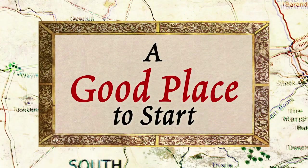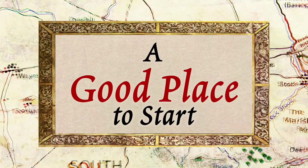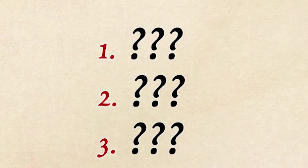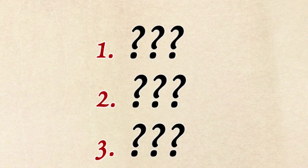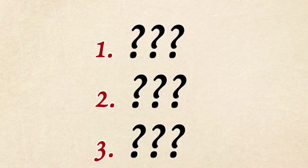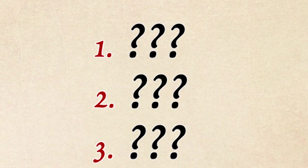Now that I knew how to make a hobbit name generator, I needed to decide what to put into the columns. How could I guarantee that the generated names would sound hobbity?